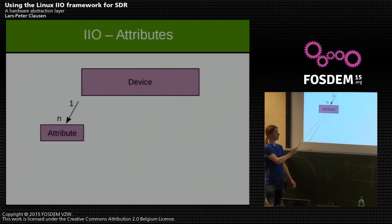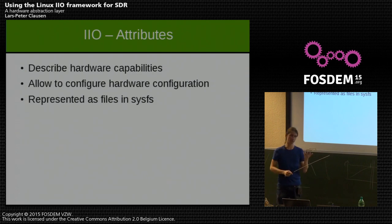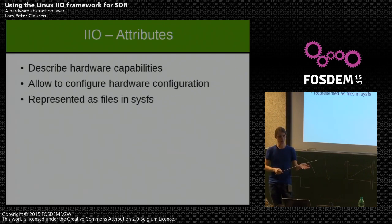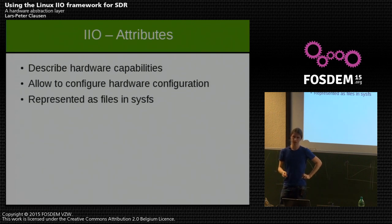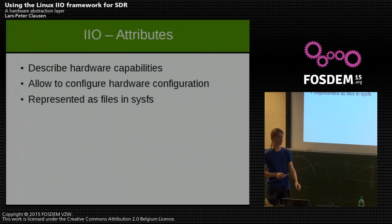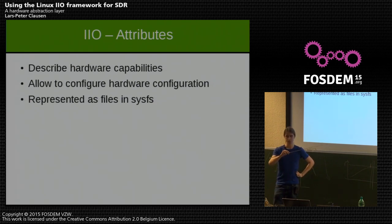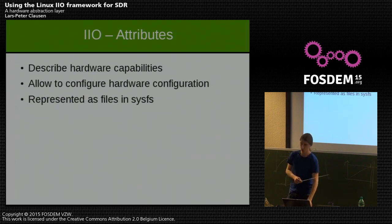One device can have many attributes, and attributes serve two main purposes: describing the capabilities of the device and allowing you to configure it. Configuration is straightforward — you have a file, you open it, and you write a new value. For example, to change the sample rate, you open the sample rate file and write a new value. Capabilities come in two flavors: if a file exists to change the sample rate, you know the device supports that. There are also files like 'sample_rates_available' which list the discrete set of supported sample rates so your application knows what the hardware can do.